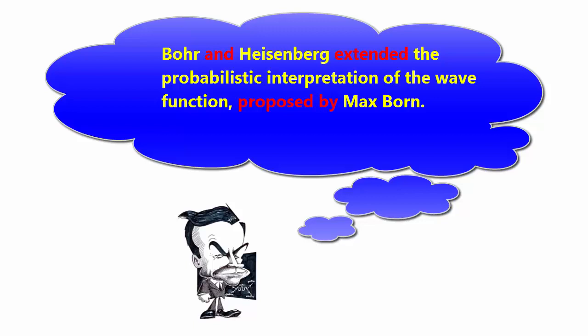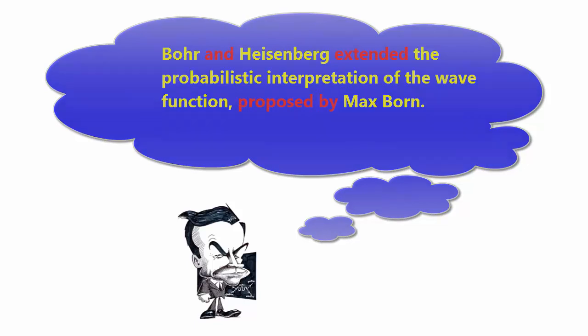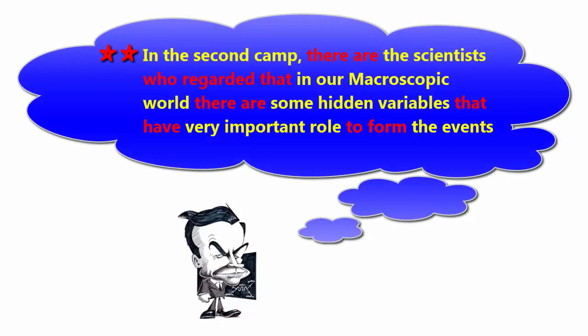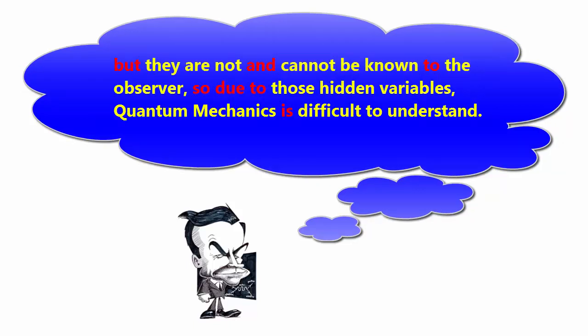In the second camp, there are the scientists who regarded that in our microscopic world there are some hidden variables that have a very important role in forming the events, but they are not and cannot be known to the observer. So due to those hidden variables, quantum mechanics is difficult to understand.